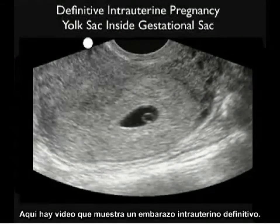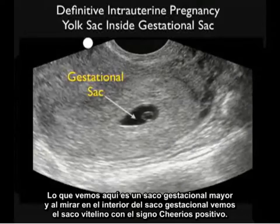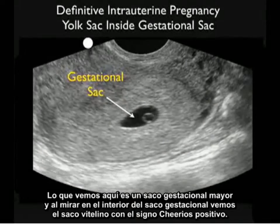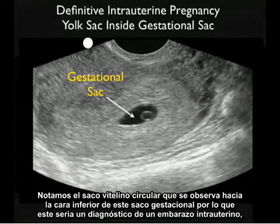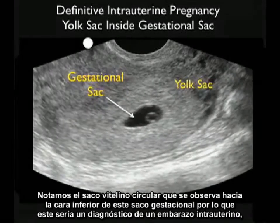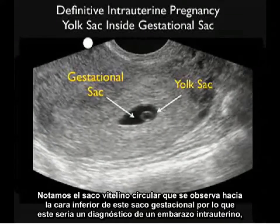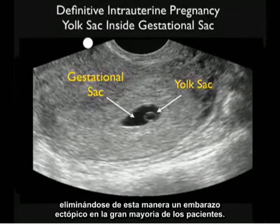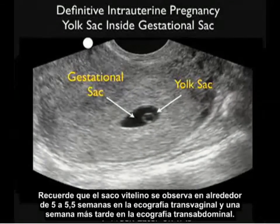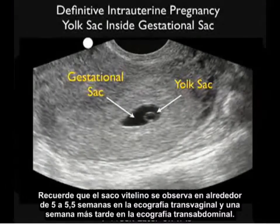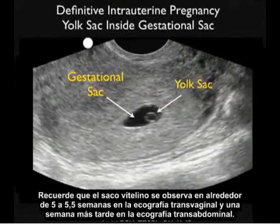Here's a video clip showing a definitive intrauterine pregnancy. We see a larger gestational sac, and inside we see the positive yolk sac or cheerio sign. Notice the circular yolk sac is seen towards the inferior aspect of the gestational sac. This is diagnostic of an intrauterine pregnancy, effectively ruling out ectopic pregnancy in the vast majority of patients. Remember, the yolk sac is seen at about 5 to 5.5 weeks on transvaginal sonography and about a week later on transabdominal sonography.